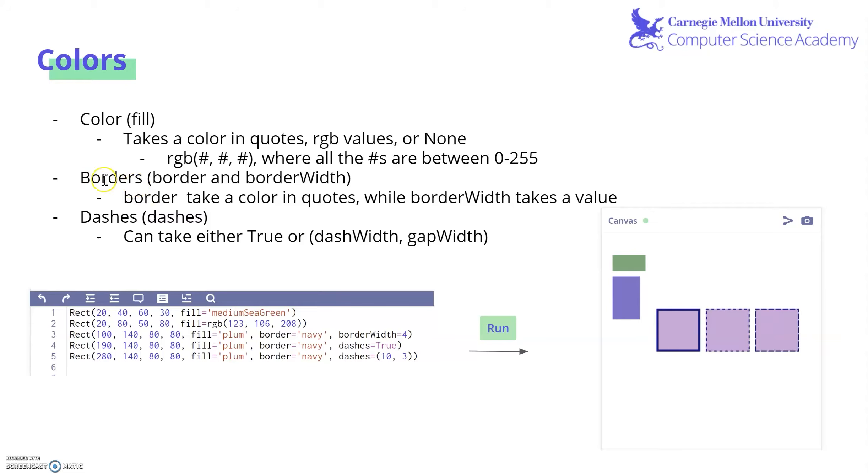Next, we have borders, where we can do both border and border width. Border takes a color in quotes, while border width takes a value. Border chooses the color of the border, border width chooses the thickness of the border. And finally, we have dashes, which can take either true or can input a dash width and a gap width.